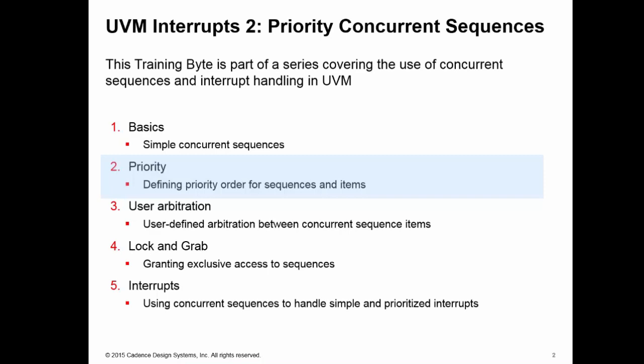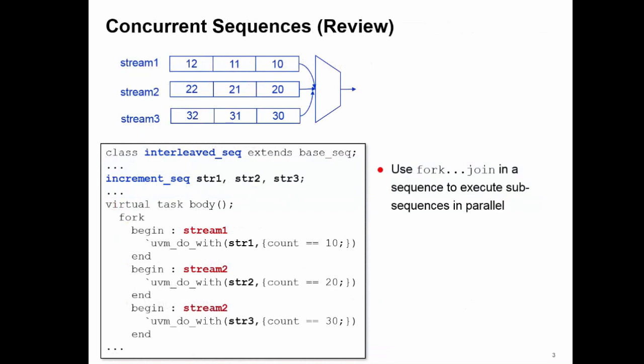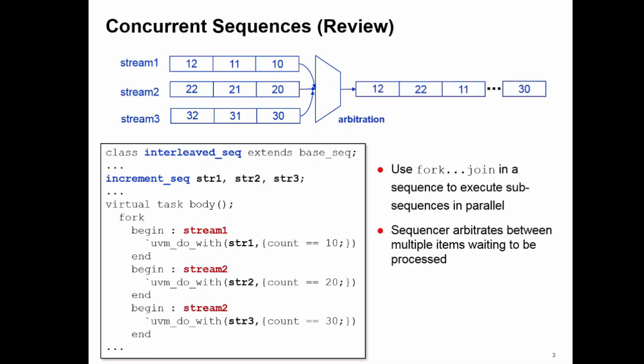Just to remind ourselves of the issue here, we're executing concurrent sequences on a sequencer. For example, using a fork join within the body of a sequence, each block of the fork join executes a different data stream on the sequencer. I have three streams here generating data items from 10, 20, and 30. The sequencer has this built-in arbitration mechanism that allows it to select between the items currently waiting to be processed.